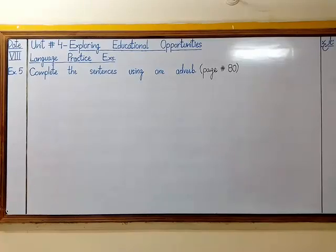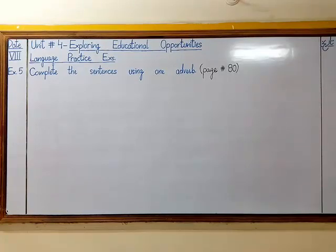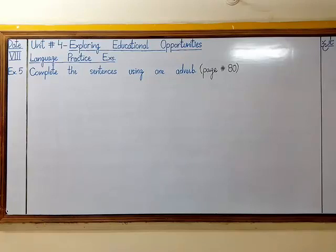Back to exercise number 5: complete the sentences using one adverb. We did exercise number 4 on page number 79 in the last video lecture and you made so many adverbs out of adjectives. There were 4 columns and you filled in all the columns with adverbs. You have to pick one adverb from there and use it in exercise number 5. I am writing all the possible sentences on the board and the remaining we will do through the book.